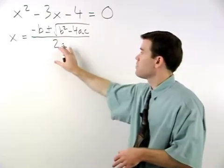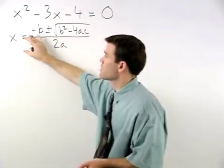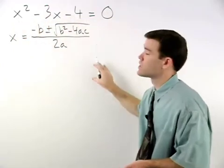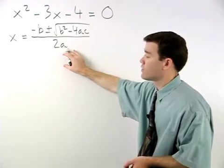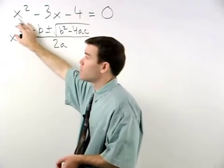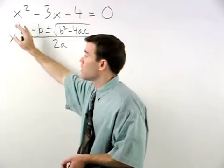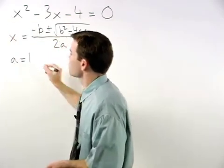The values for a, b and c in the formula come from the coefficients on our three terms in the trinomial. The value for a comes from the coefficient on the x squared term, which in this case is 1, so we say that a equals 1.